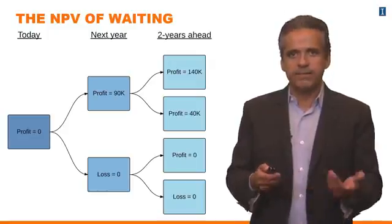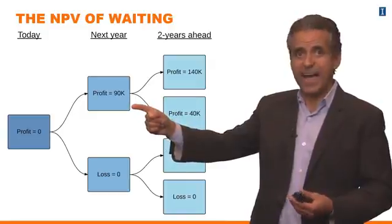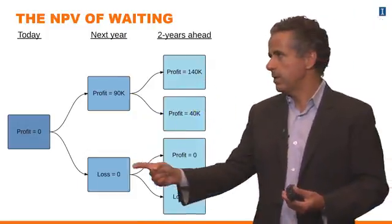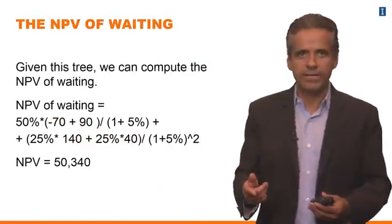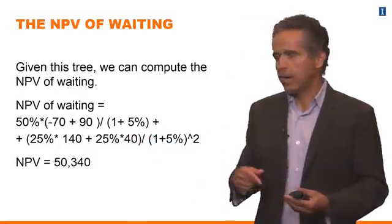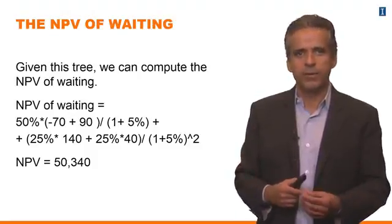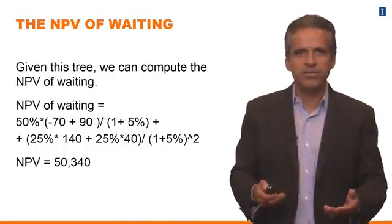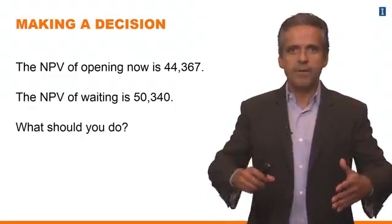Given this tree, computing the NPV of waiting is straightforward. If you wait, you open the mine one year from now: you pay $70,000 and get a profit of $90,000, netting $20,000. Then you account for the probabilities in year two — a 25% chance of $140,000 profit and a 25% chance of $40,000 profit — discounted two years. If the gold price goes down you get zero. The NPV of waiting comes out to $50,340.